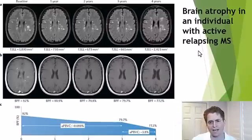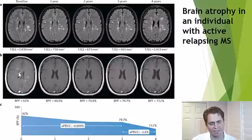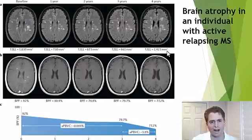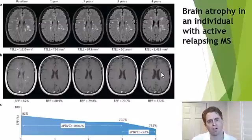Another outcome is brain atrophy or shrinkage. Here we're looking at sequential MRIs in someone with active relapsing MS. On the left is the baseline MRI — the top images are T2 FLAIR, and on the bottom with contrast dye, you can see many active lesions. Subsequent scans at years 1, 2, 3, and 4 show the ventricles, or fluid-filled spaces, and the sulci, or gaps between the gyri or folds of the brain, are enlarging, suggesting the brain is shrinking.